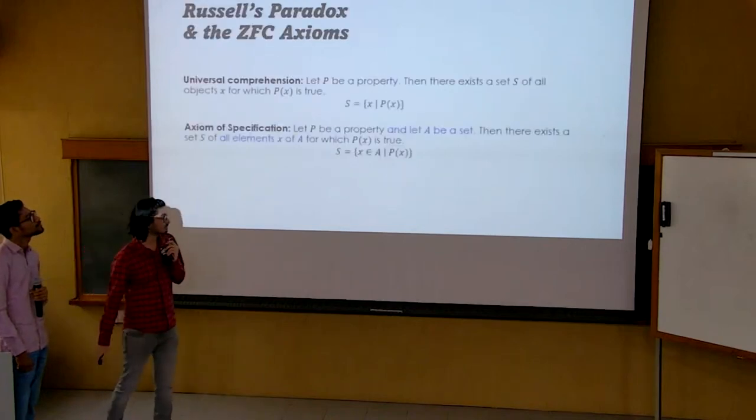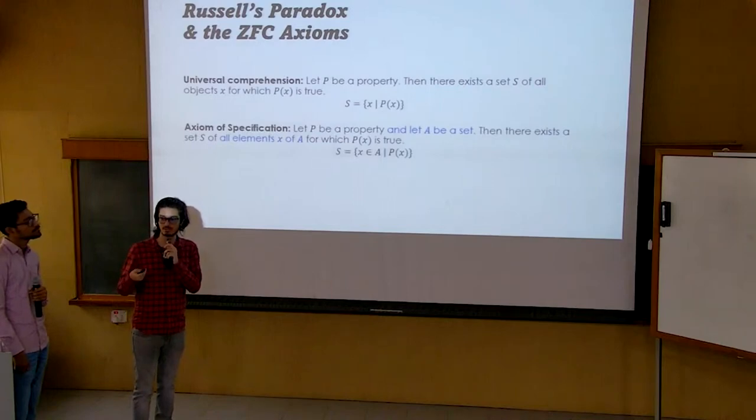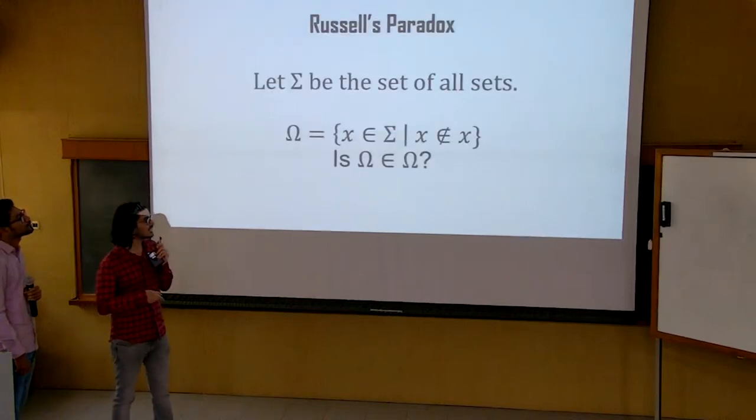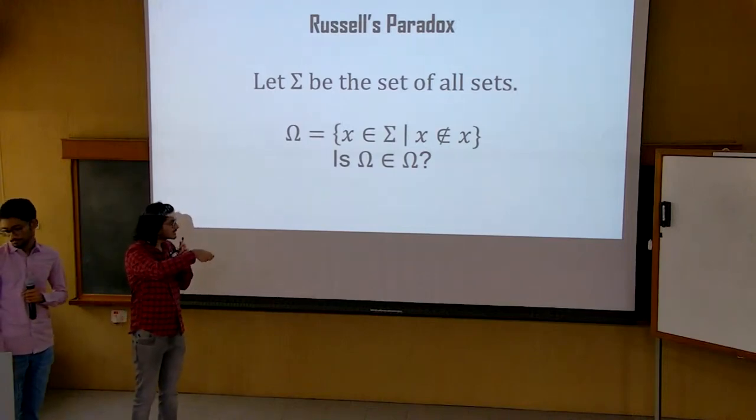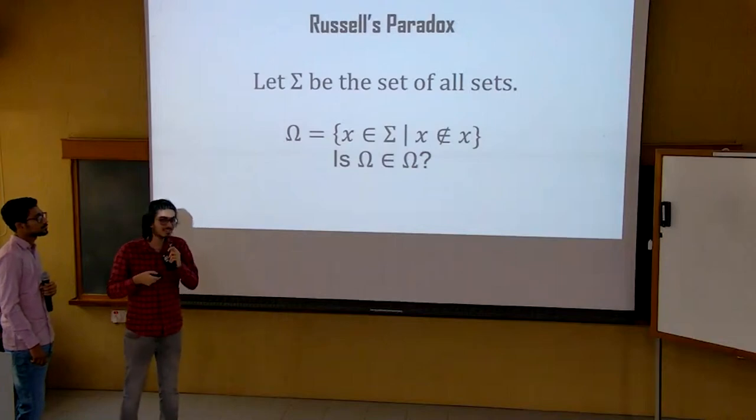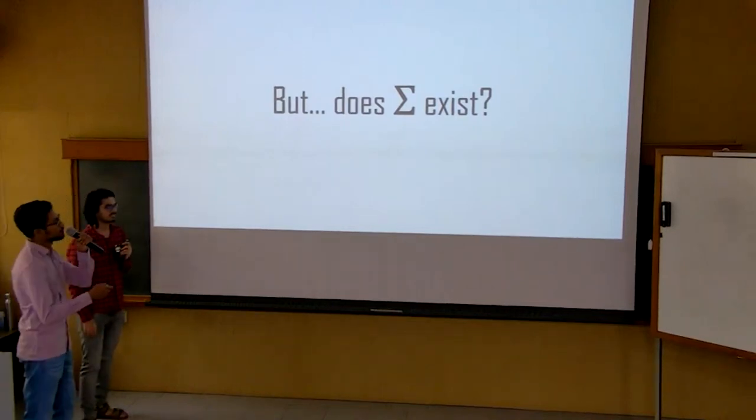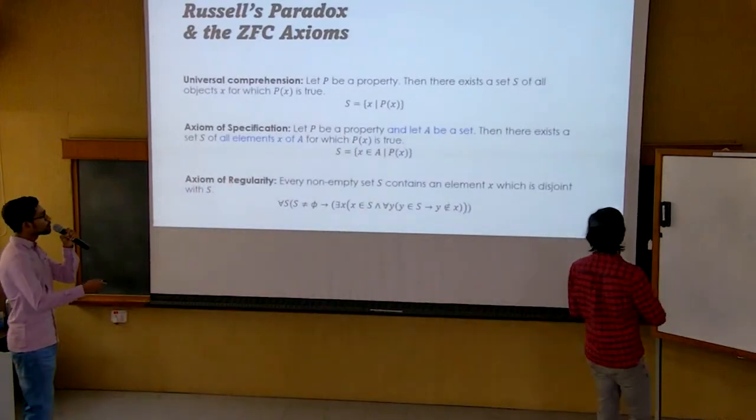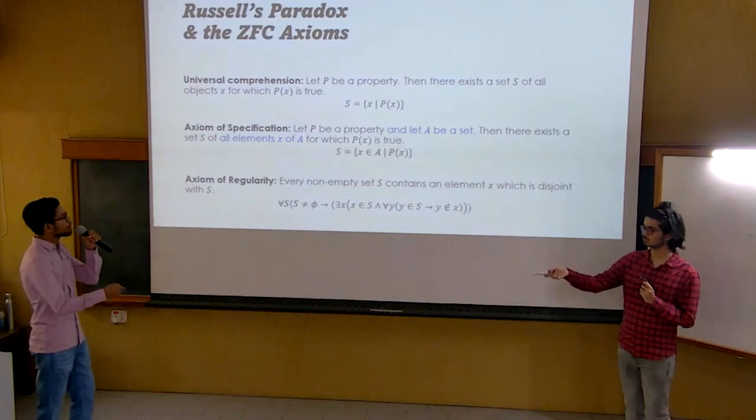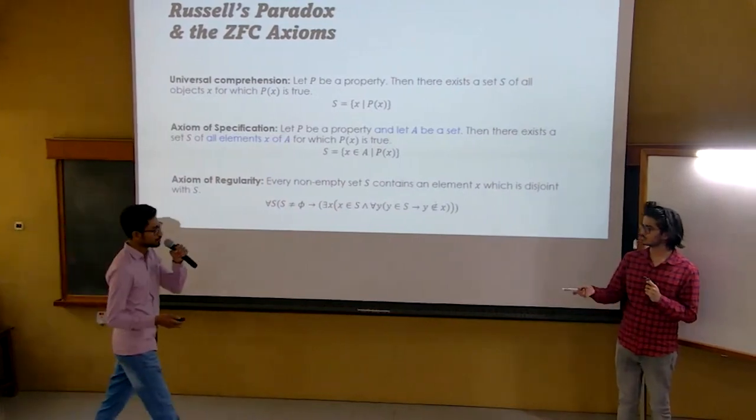Zermelo replaced this by the axiom of specification, which requires that a set A already exists, and we can create a subset from it of objects which obey the given property. And this now forces us to define omega not as X such that X is a set, but instead as X, an element of sigma, such that X does not belong to X. So if sigma is the set of all sets, does sigma exist? Let's look at another axiom of ZFC, namely the axiom of regularity, which says that every non-empty set S contains an element X which is disjoint from S.